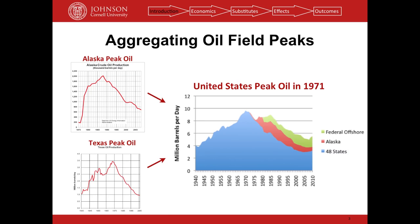You can aggregate fields across states — Alaska and Texas have both peaked. You can aggregate all U.S. fields to see the production curve for the United States, which peaked back in 1971. We've added offshore drilling as well as Alaskan oil with a pipeline built to bring it down, but this did increase our oil production — just not enough to make up for the decline of the depleting fields.